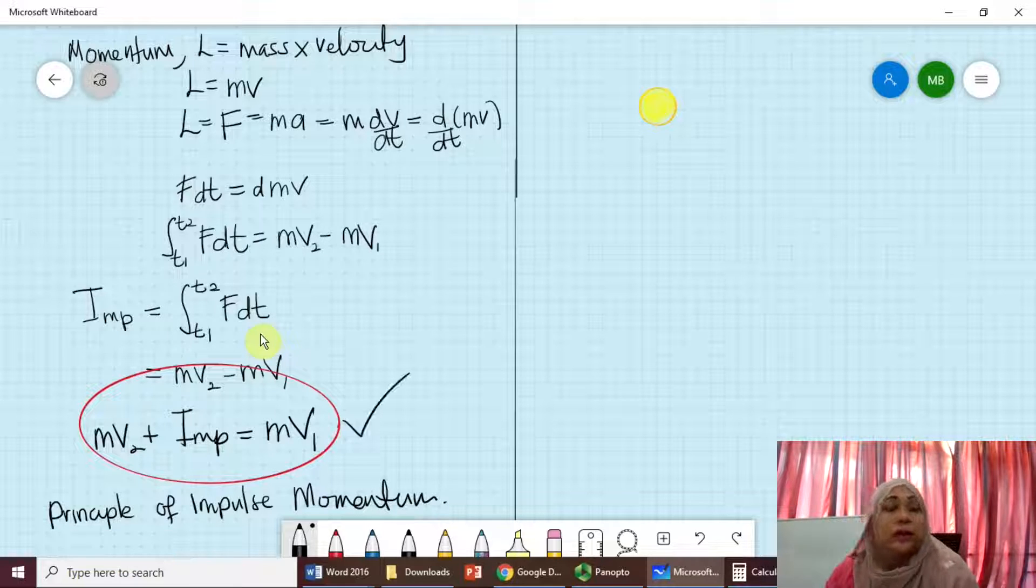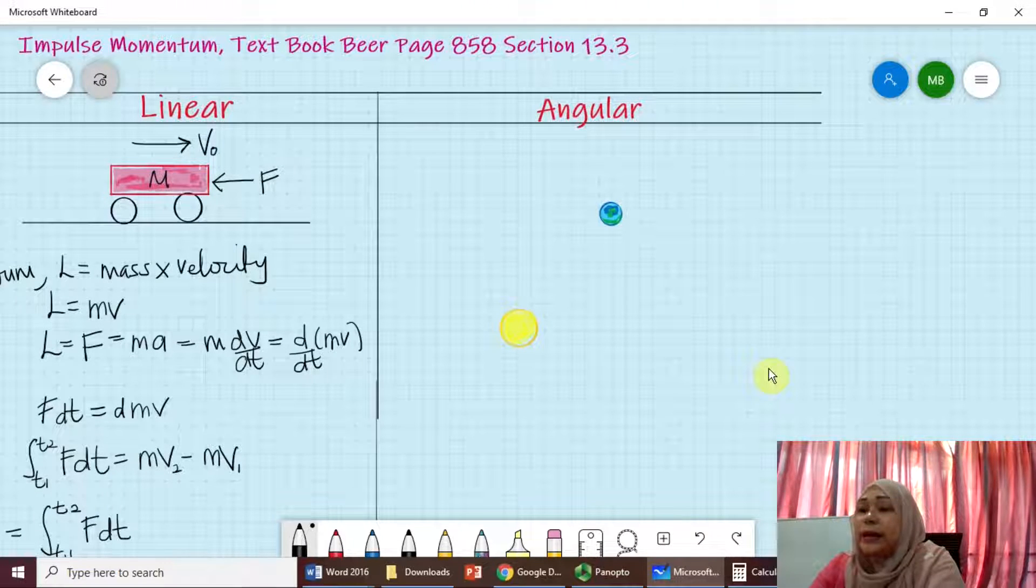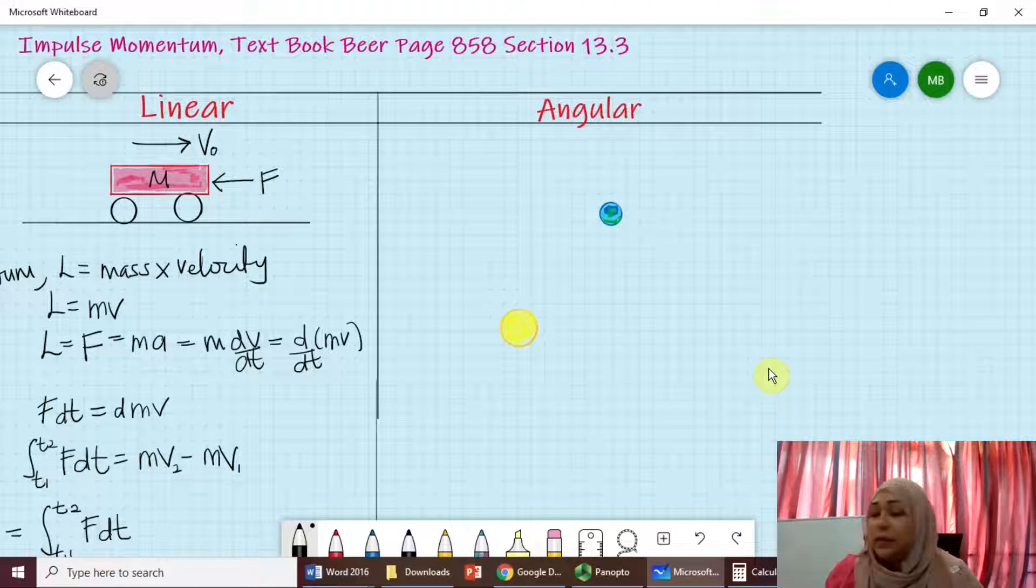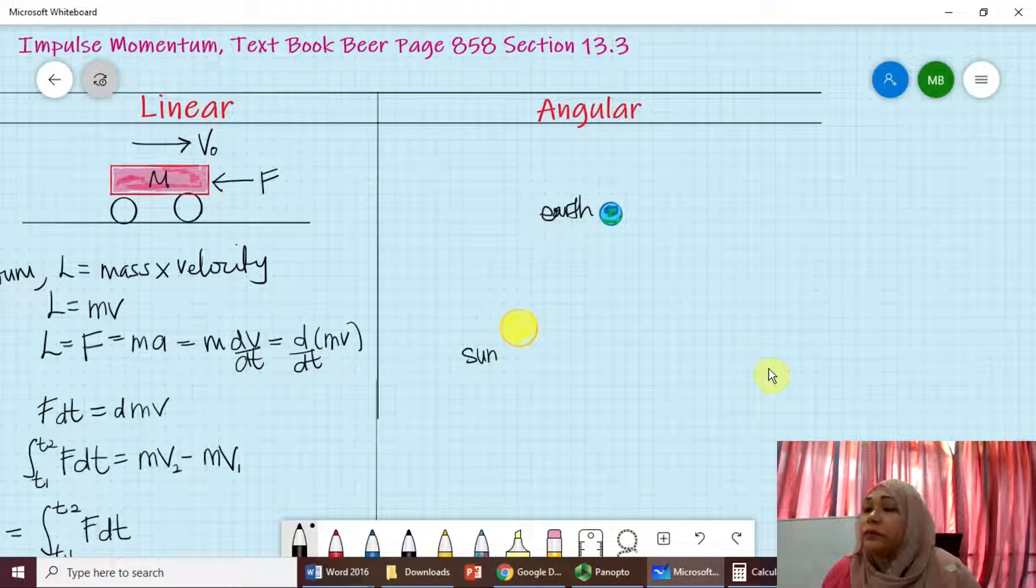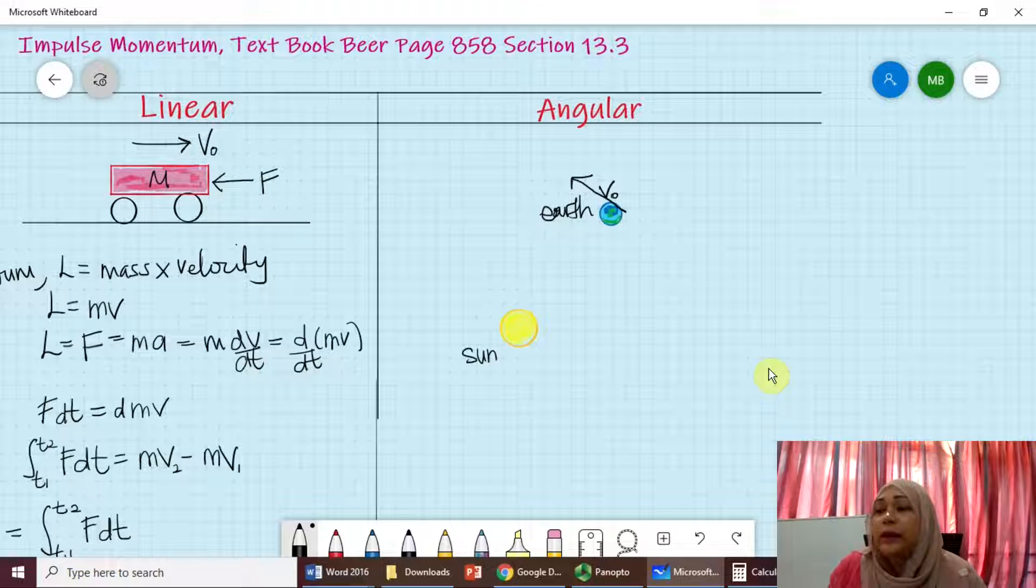So this is an important formula. That is explaining linear momentum. Now, we are going to go to our second example. Now, let's imagine we have Earth. This blue figure here is Earth. And we have here a Sun. Now, Earth will have a velocity. Let's say Earth has a velocity.